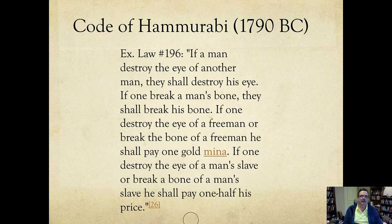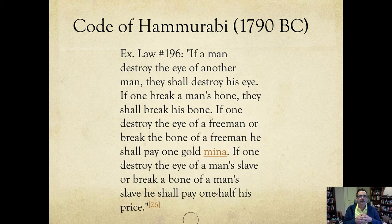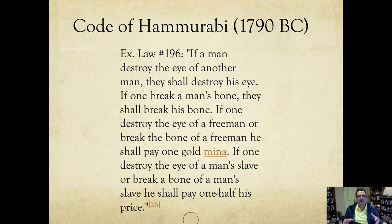This is from the Code of Hammurabi: 'If a man destroy the eye of another man, they shall destroy his eye.' There are these if-then rules — just like in computer programming there are lots of if-then statements. Hammurabi is full of this kind of thing, but it's not expressed formally in a programming language; it's just in natural language.